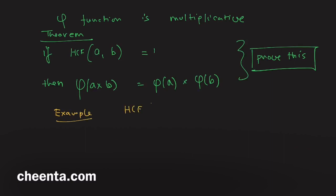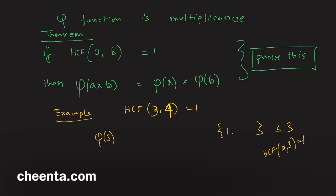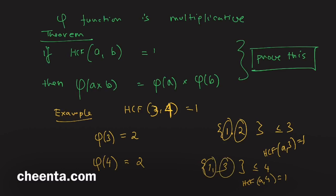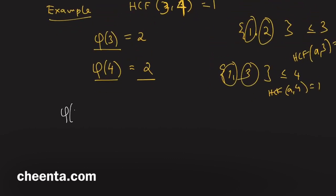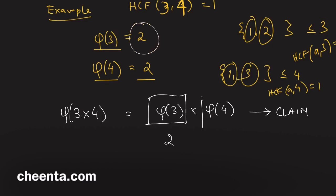For example, HCF(3,4) = 1. What is φ(3)? The numbers less than or equal to 3 with HCF 1 with 3 are 1 and 2, so φ(3) = 2. And φ(4) = 2 as well, because the numbers less than or equal to 4 with HCF 1 with 4 are 1 and 3. By the multiplicative property, φ(3×4) = φ(3)×φ(4) = 2×2 = 4.